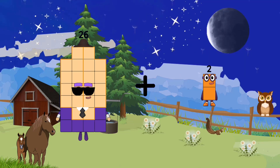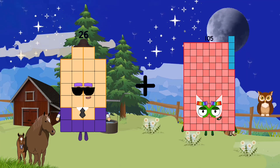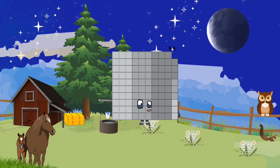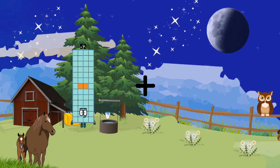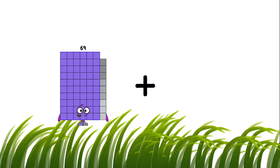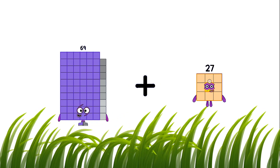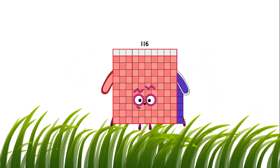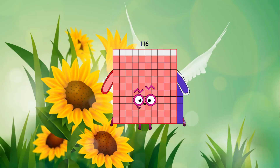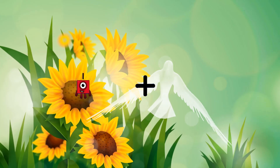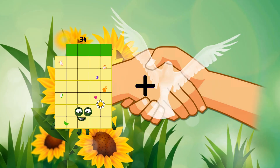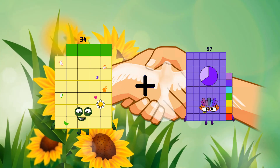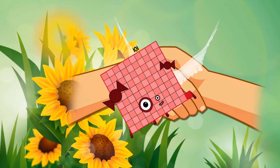26 plus 73 equals 99. 69 plus 47 equals 116. 34 plus 67 equals 101.